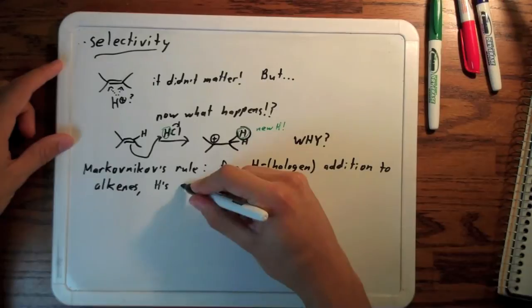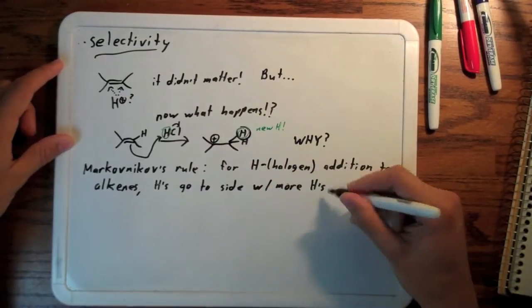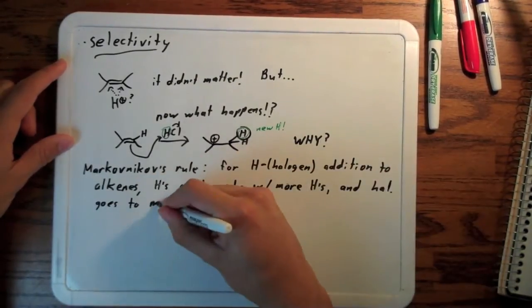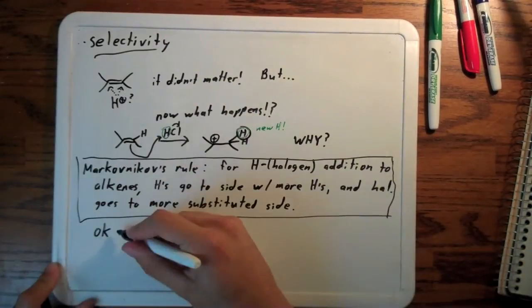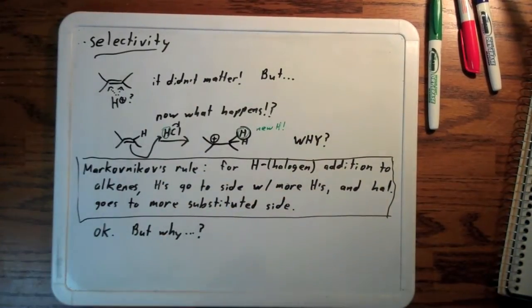I'll show you in a second, but one thing you should know is that Markovnikov's rule states that for hydrogen halide addition to alkenes, the H always goes on the side that has more H's. The answer has to do with something called hyperconjugation.